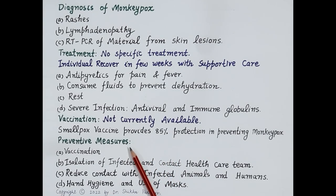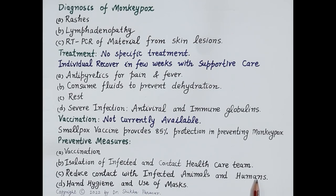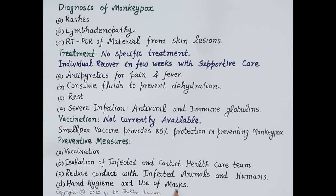Prevention is better than cure. Preventive measures that reduce the risk of catching monkeypox virus include: vaccination with the smallpox vaccine; isolating infected individuals as soon as possible and contacting the healthcare team immediately; reducing contact with infected animals and infected humans; not using contaminated objects like towels or bed sheets of an infected person; not consuming infected or improperly cooked meat; maintaining proper hygiene, keeping hands clean, and wearing a mask since infection can spread through cough or sneeze; and avoiding travel to affected foreign countries.